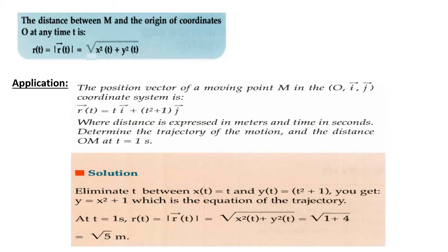The question is to determine the trajectory of the motion and the distance om at t equals 1 second. Regarding the trajectory of the motion, we can determine the parametric equations: x equals t, and y equals t squared plus 1. Making some calculation, you get the formula y equals x squared plus 1, which is the equation of the trajectory. It is a parabola.